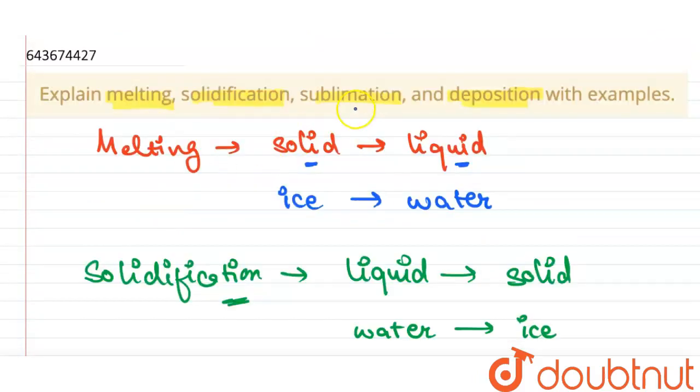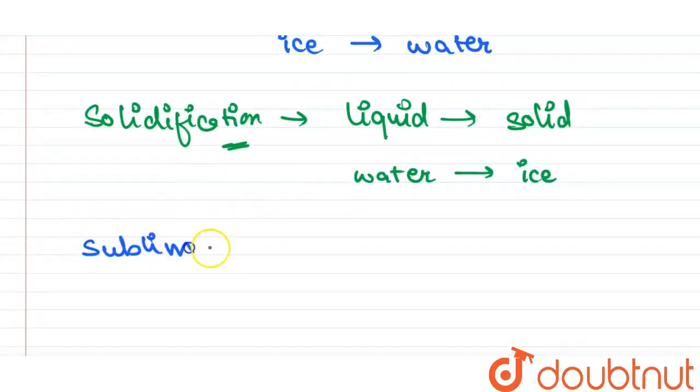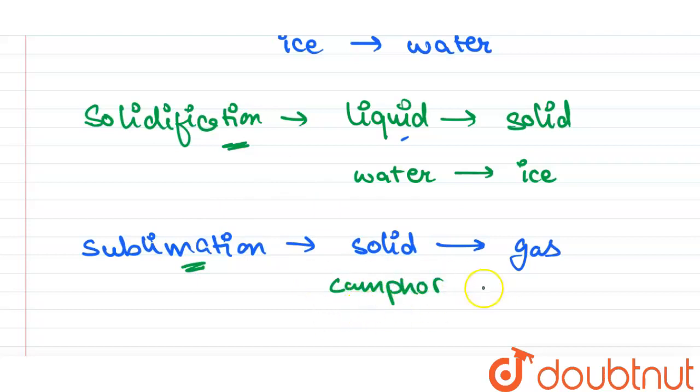Then sublimation. Sublimation is the process where solid is directly converted into gas without going through liquid. Solid is directly converted into gas—this is called sublimation. For example, we have seen that we have camphor at our home; it gets converted directly from solid to gas. So camphor is an example for sublimation.